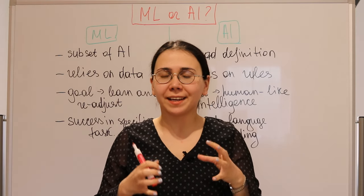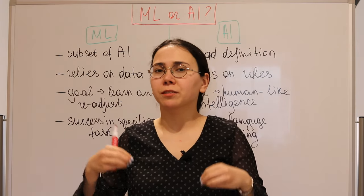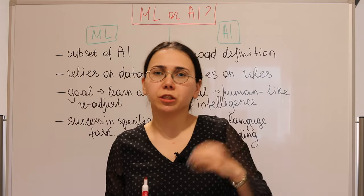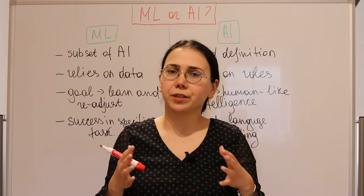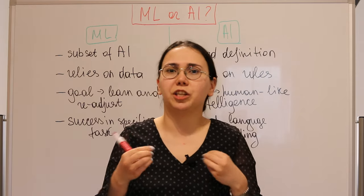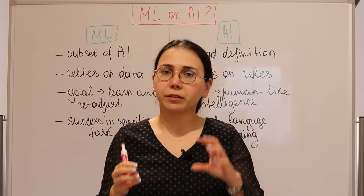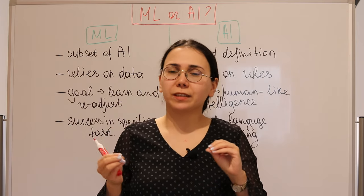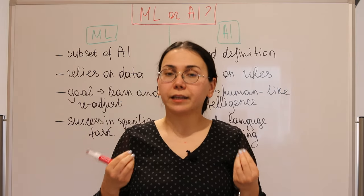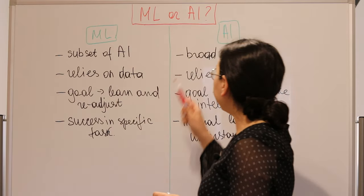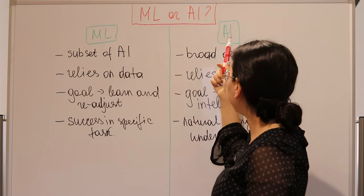Machine learning and AI have become very common buzzwords lately — so common that people sometimes use them interchangeably. Instead of saying AI they say machine learning to seem cooler, or vice versa. The question is: can we use these two definitions interchangeably? Are they related, and if so, to what extent? In this video I'll try to bring clarity to these two definitions so they actually carry meaning.